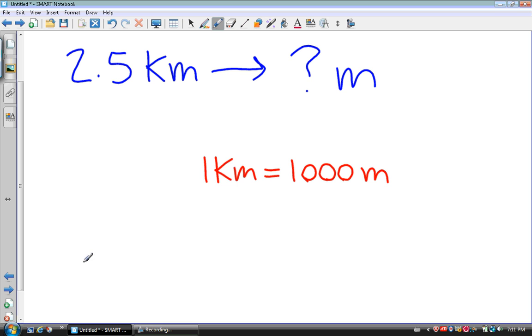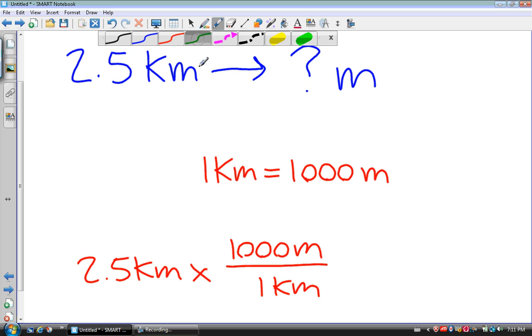So I take 2.5 kilometers and multiply this by my rate. The units that I want are meters, that goes up top. The units that I don't want are kilometers, so that goes on the bottom. My kilometers cancel out, and I get 2.5 times 1,000, which is 2,500 meters.